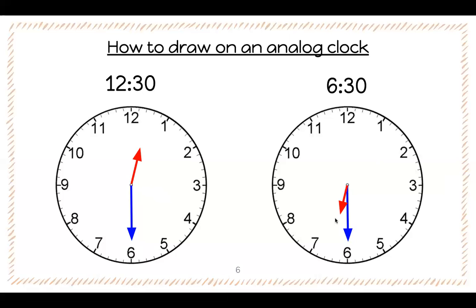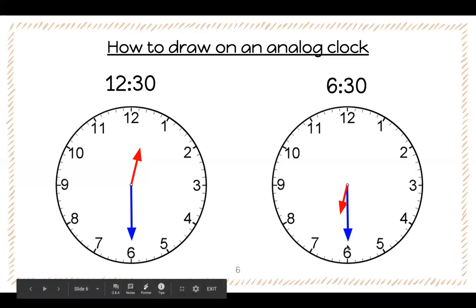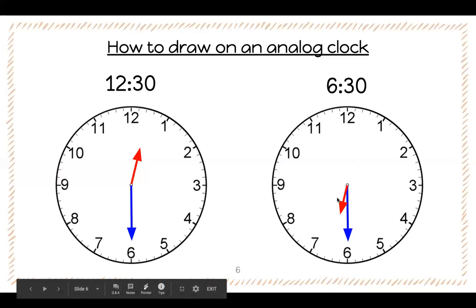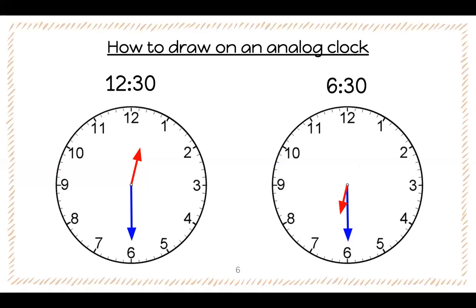Now we're going to look at 6:30. Our minute hand should be on the 30, right in the middle. Let's double check — 5, 10, 15, 20, 25, 30. Because it's 30 minutes past, the hour hand is going to be halfway in the middle between 6 and 7, so it says 6:30. Now you need to complete the rest of the times listed on your packet in your math notebook. Remember to draw your clock as well as label what time it is. If you have a crayon or marker you can draw your hour and minutes hands in red and blue — that would be great.